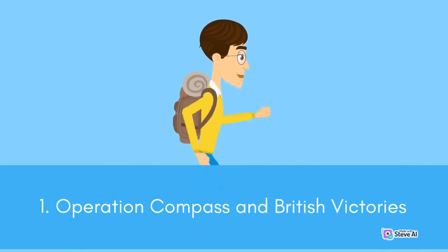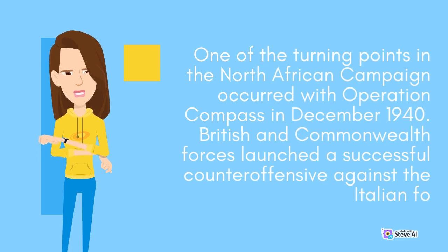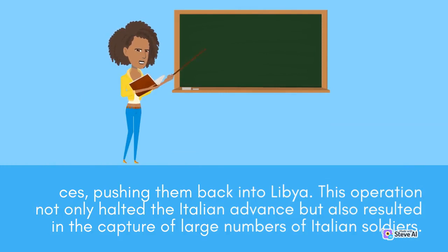Operation Compass and British Victories: one of the turning points in the North African campaign occurred with Operation Compass in December 1940. British and Commonwealth forces launched a successful counteroffensive against the Italians, pushing them back into Libya. This operation not only halted the Italian advance but also resulted in the capture of large numbers of Italian soldiers.